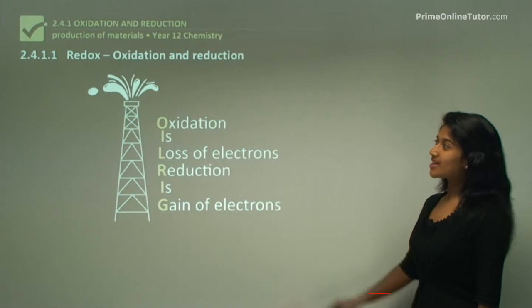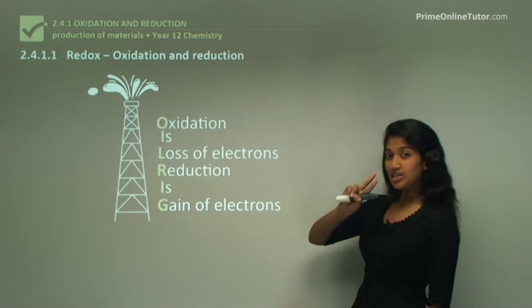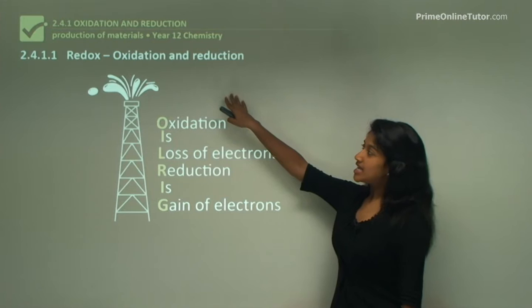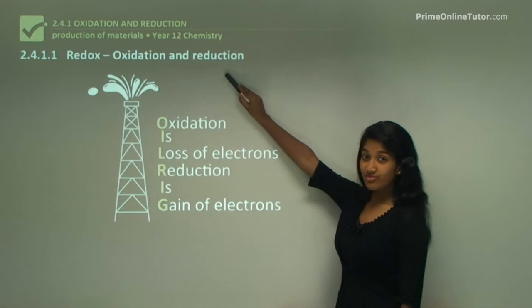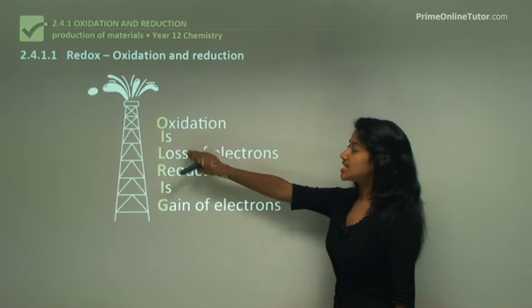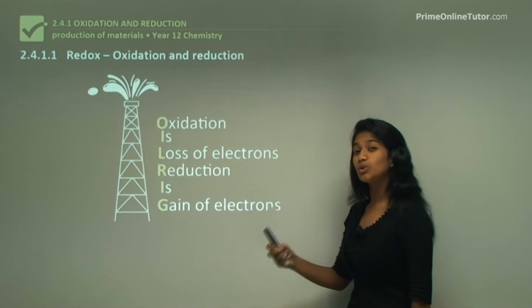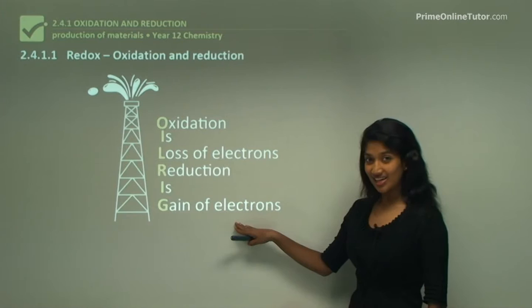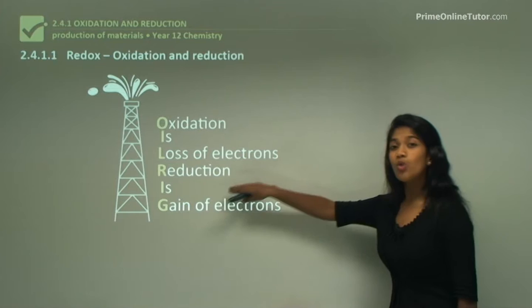We'll be starting with redox reactions. Now what are redox reactions? There are two half equations or half reactions happening in a redox reaction. In a redox reaction there is an oxidation reaction as well as a reduction reaction.